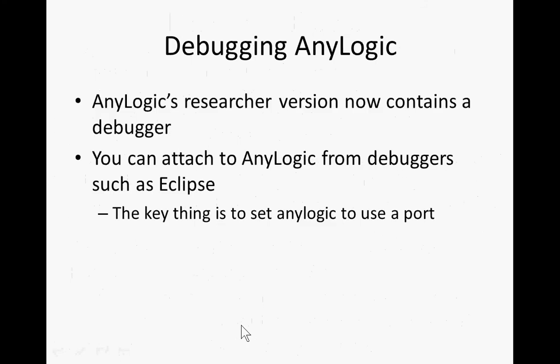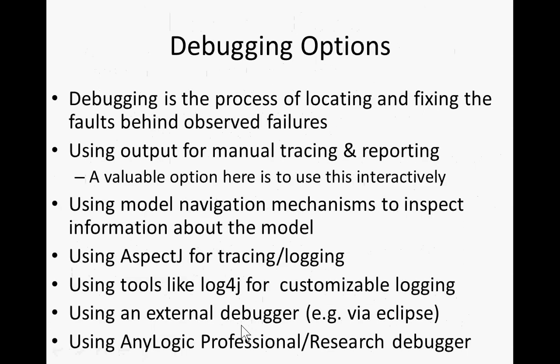Let's talk about debugging AnyLogic. AnyLogic's researcher version contains a tool called the debugger, and we can attach to AnyLogic from debuggers elsewhere. But you shouldn't reflexively just use the debugger — it's a very powerful tool but not one you want to use in all circumstances. Exercise it judiciously and with caution. Debugging is the process of locating and fixing faults behind observed failures. You'll often use output from manual tracing and reporting to the console, and use it interactively to zero in on where things are. Sometimes you can use tools like AspectJ, which we've used together with AnyLogic, and there's a tool called Log4J.